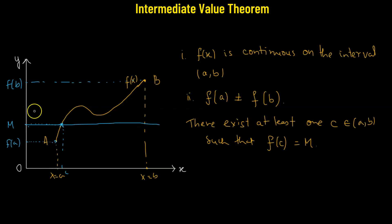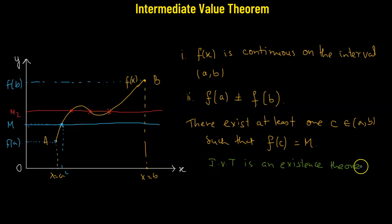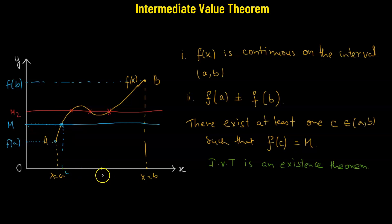So it could be more than one as well. If we consider the value M2, then the straight line — it's a horizontal line — is going to intersect the curve at three points. So the intermediate value theorem is merely an existence theorem. It means that given the interval A and B, there is going to be some value C for which we will have f of C. It only says that there is going to be some solution that exists for any values of x on the interval A and B, but it cannot say what the value of that particular solution is.